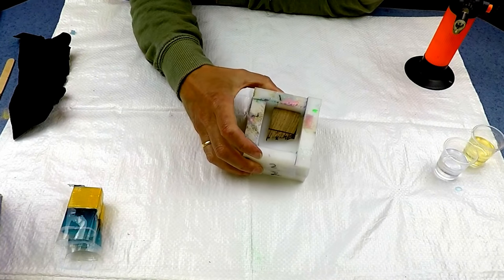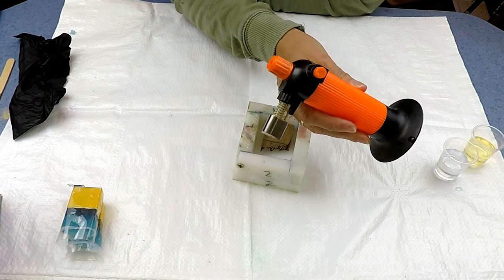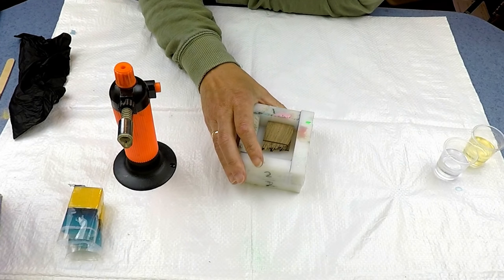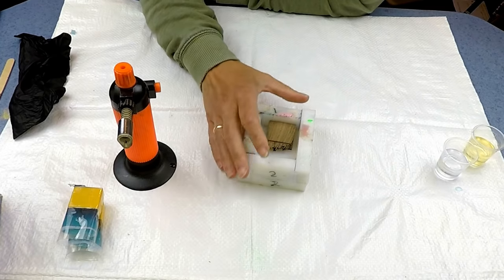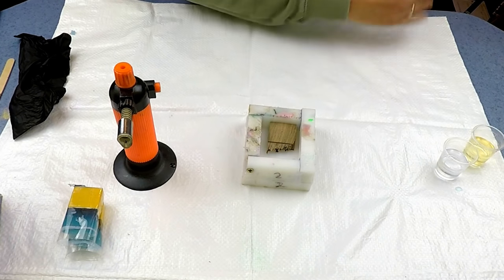We'll do another one in a normal straight mold because I'm going to use this little torch this time to pop the bubbles. We'll see if we can get a clear one, and then when that one's cured, we'll clean that one up as well and have a look to see if this gets rid of the bubbles.